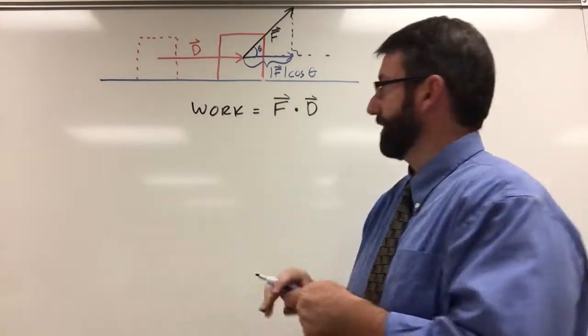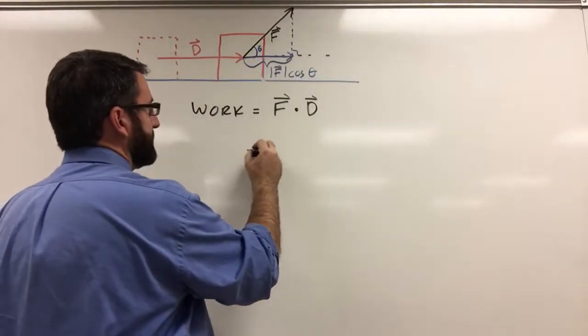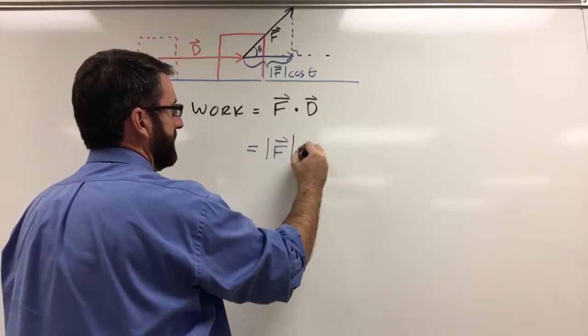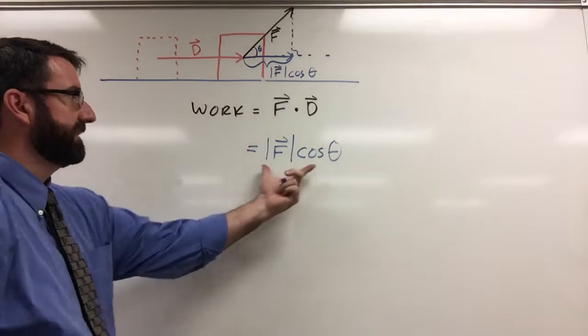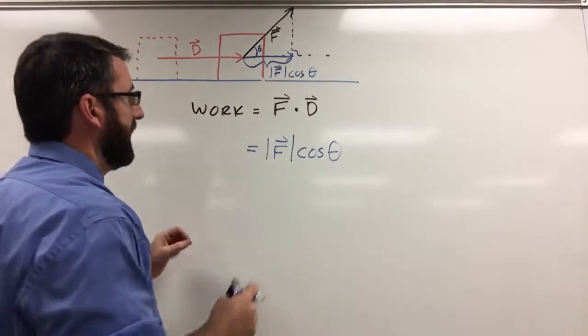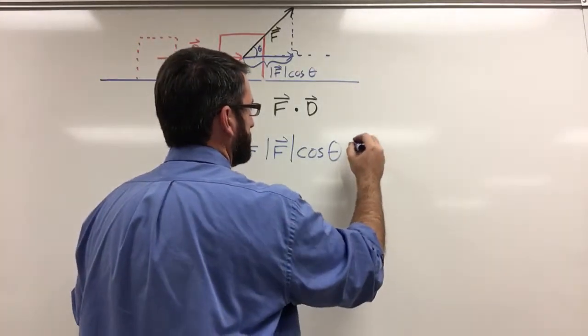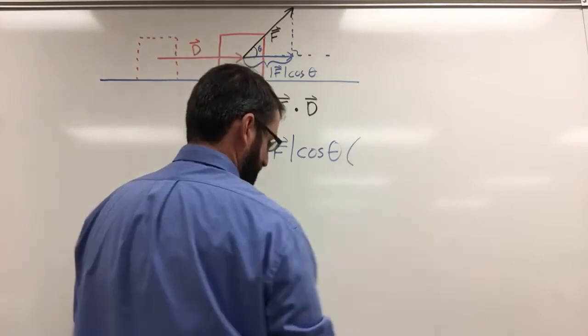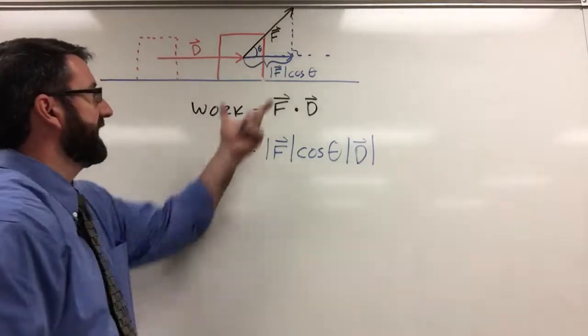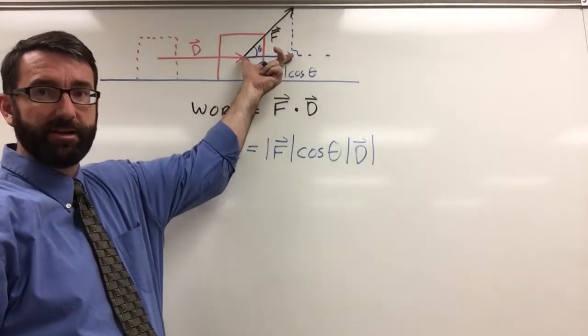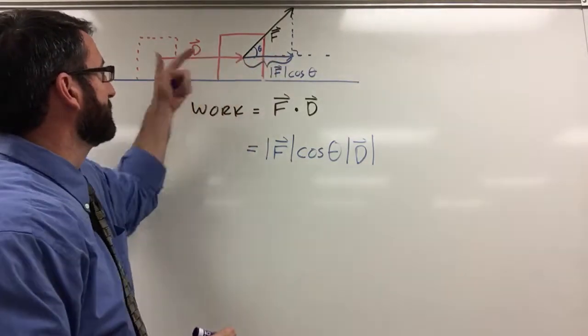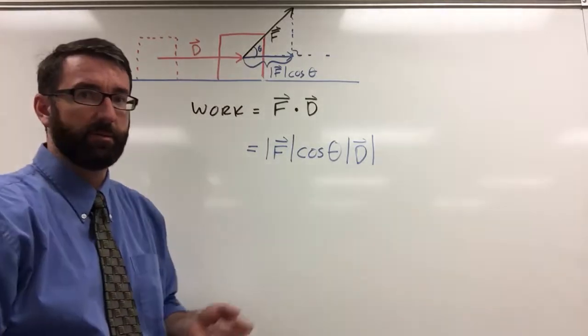That's going to give us our work. So work is going to be equal to this here, the magnitude of the force times the cosine of theta. That's the magnitude of the force in the direction of D. So we're taking this magnitude here of this vector, the amount of force only in the horizontal direction, we're multiplying it by the magnitude of D, which is the distance that we've moved it.